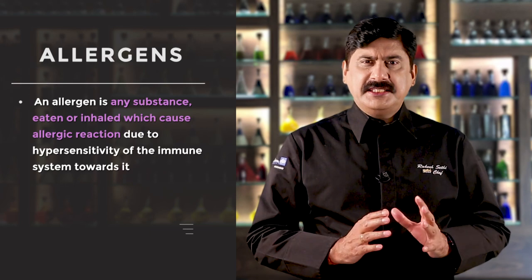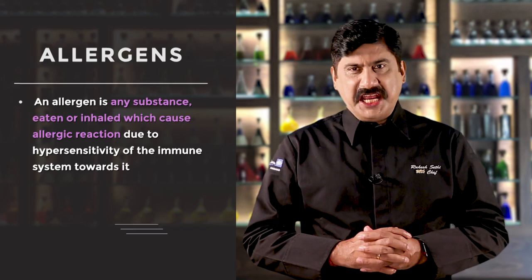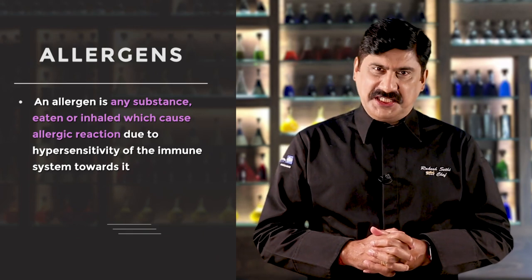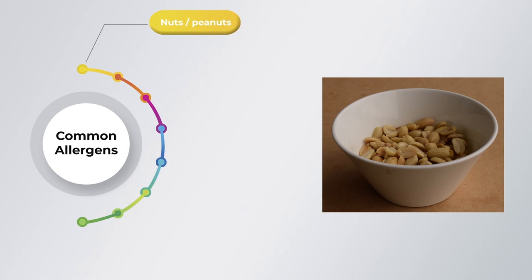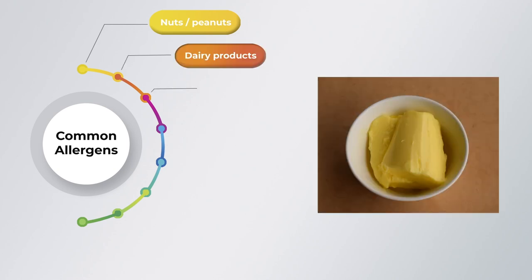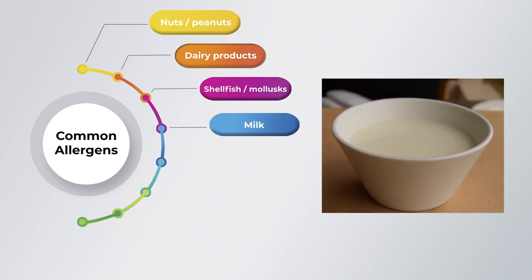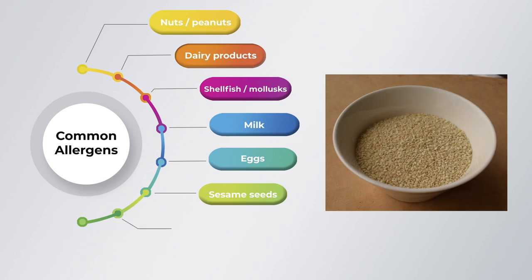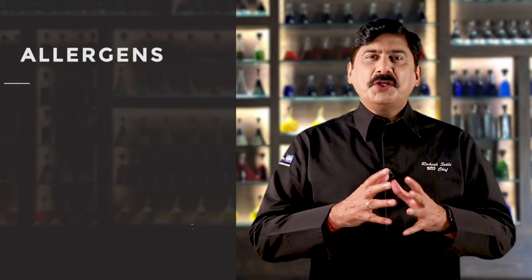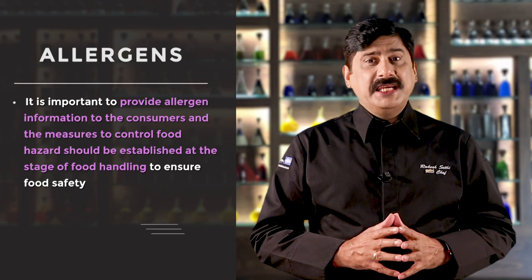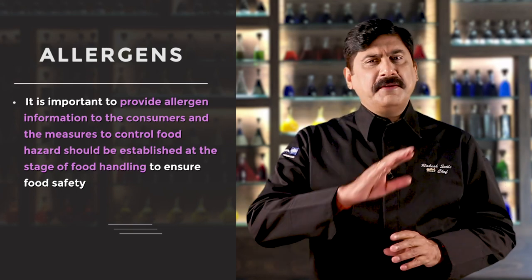Before we move ahead, it is important to know about certain harmful substances in food known as allergens. An allergen is any substance eaten or inhaled which causes allergic reaction due to hypersensitivity of the immune system towards it. Nowadays, a lot of people have food allergies. Consumption of certain foods may lead to allergic reactions in the human body which are hazardous and can even cause death. Some common allergenic foods are nuts or peanuts, dairy products, shellfish or mollusks, milk, eggs, sesame seeds, soya and certain food additives. It is important to provide allergen information and establish controls at the stage of food handling to ensure food safety and prevent food spoilage.